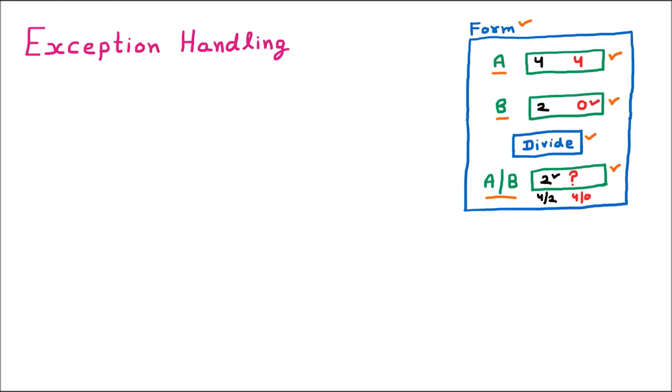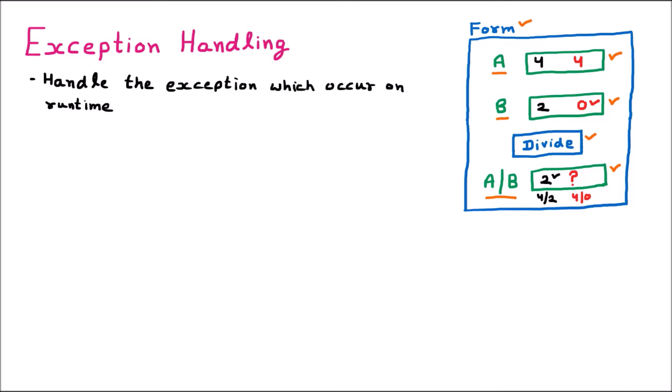Such things are called exceptions — for example, providing 0 in a division. Normal people provide values like 4 and 2, giving simply 4 divided by 2 equals 2. But exceptions involve 4 by 0, 5 by 0, or anything divided by 0. For such exceptions we have exception handling. Importantly, dividing 4 by 0 is not an error — it is an exception, something different.